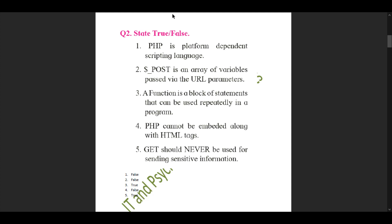We move forward to question 2: state true or false. First statement — PHP is a platform-dependent scripting language: this is false. Second — dollar underscore POST is an array of variables passed via the URL parameters: this is false. Third — a function is a block of statements that can be used repeatedly in a program: true. Fourth — PHP cannot be embedded along with HTML tags: false. Fifth — GET should never be used for sending sensitive information: true.